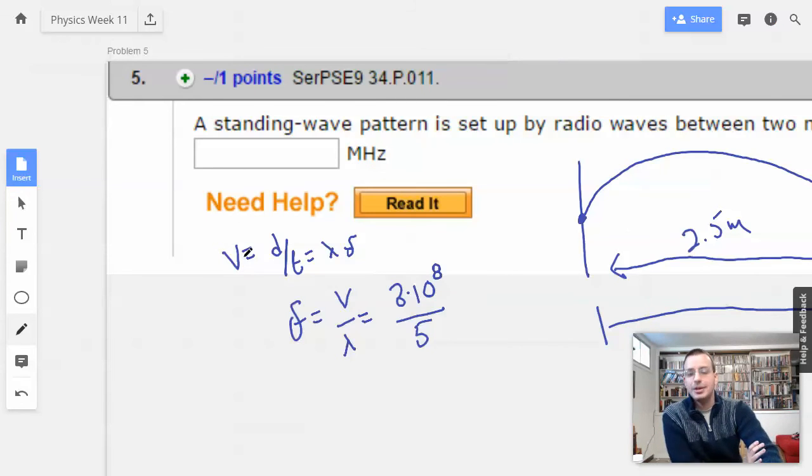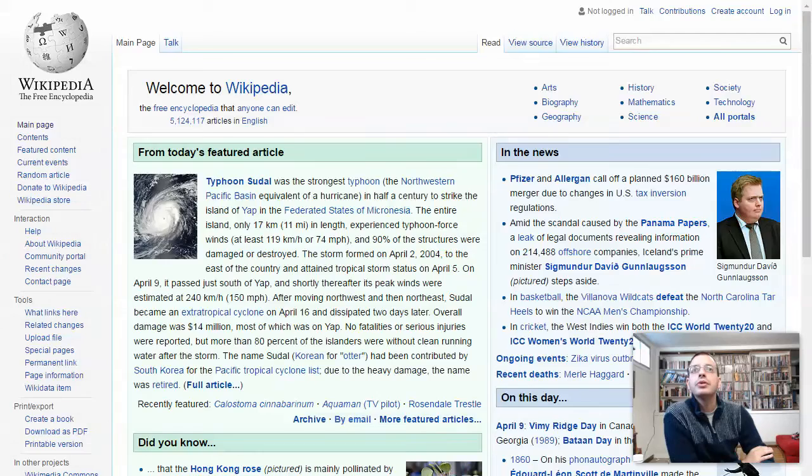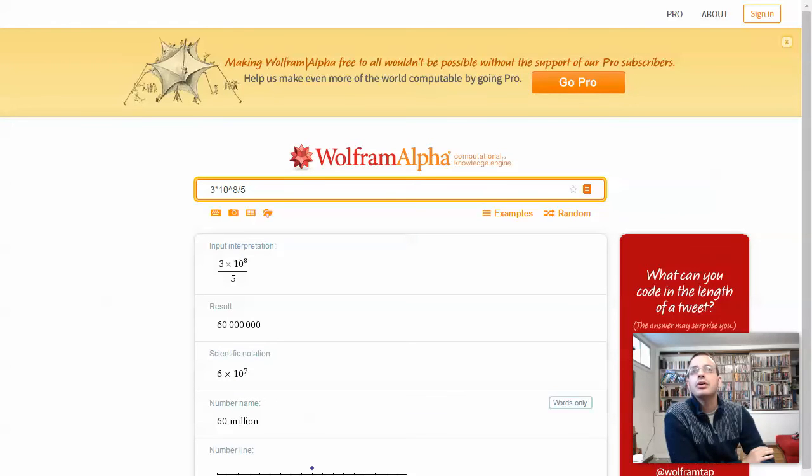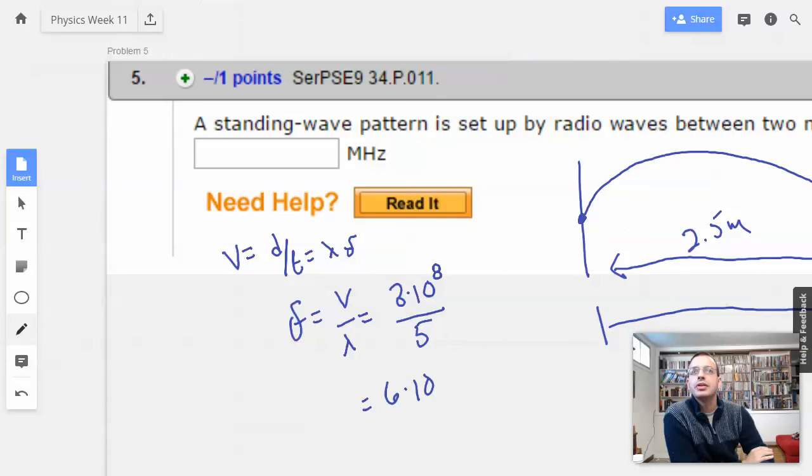Bam. We want it in megahertz. Wait a sec. OK. 3 times 10 to the 8th over 5. OK. I'm good at that. 10 to the 7th, which equals 6 times 10 times 10 to the 6th, which is 60 megahertz. So 60. Bam.